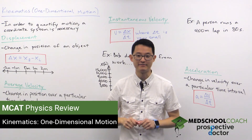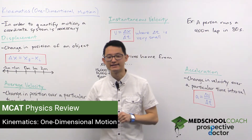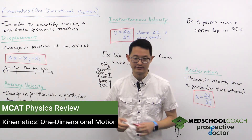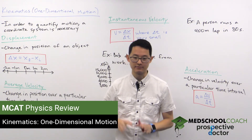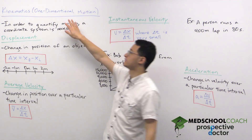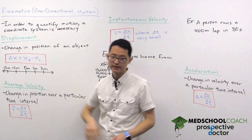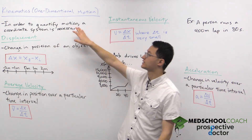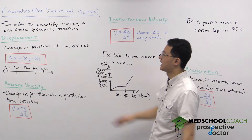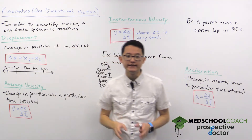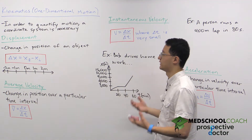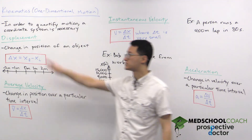Let's talk about kinematics. Kinematics is a branch of classical mechanics that describes the motion of objects without referring to forces — we'll talk about forces in subsequent videos. Here we're going to start by talking about kinematics specifically with one-dimensional motion. Again, in subsequent videos we'll look at two-dimensional motion. The first thing we want to understand is that to quantify motion we need a coordinate system, which we can see best by looking at our first vector quantity: displacement.